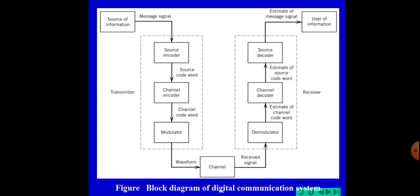The next section is the source encoder. The source encoder encodes the message signal produced by the information source. The symbols produced by the information source are given to the source encoder. The source encoder assigns a unique codeword for each distinct symbol of the input sequence.